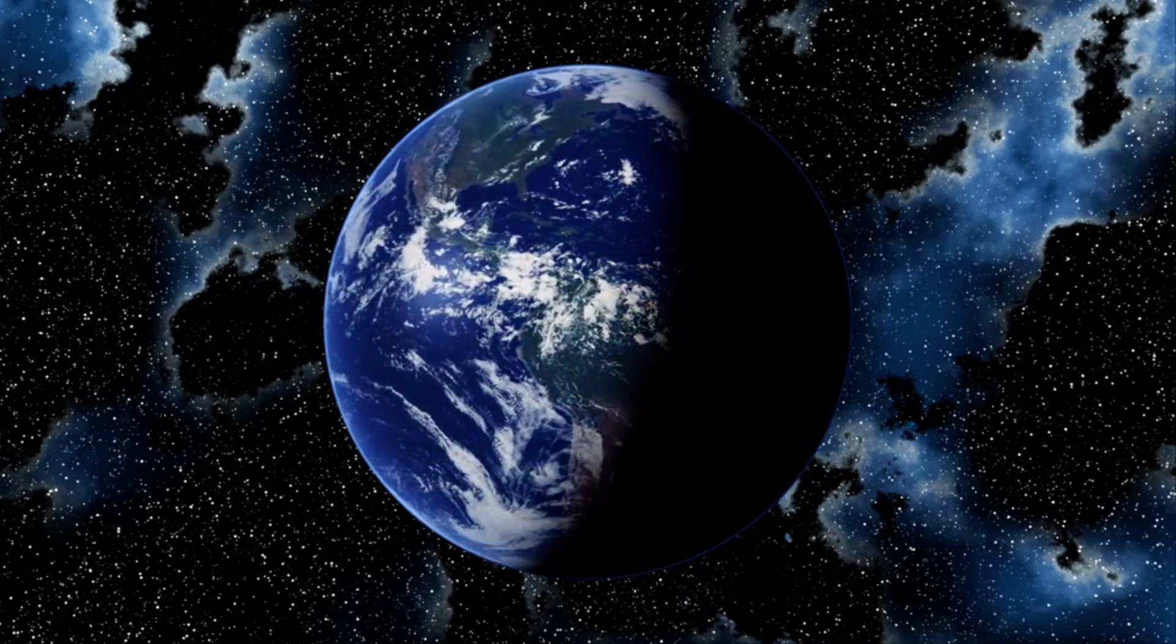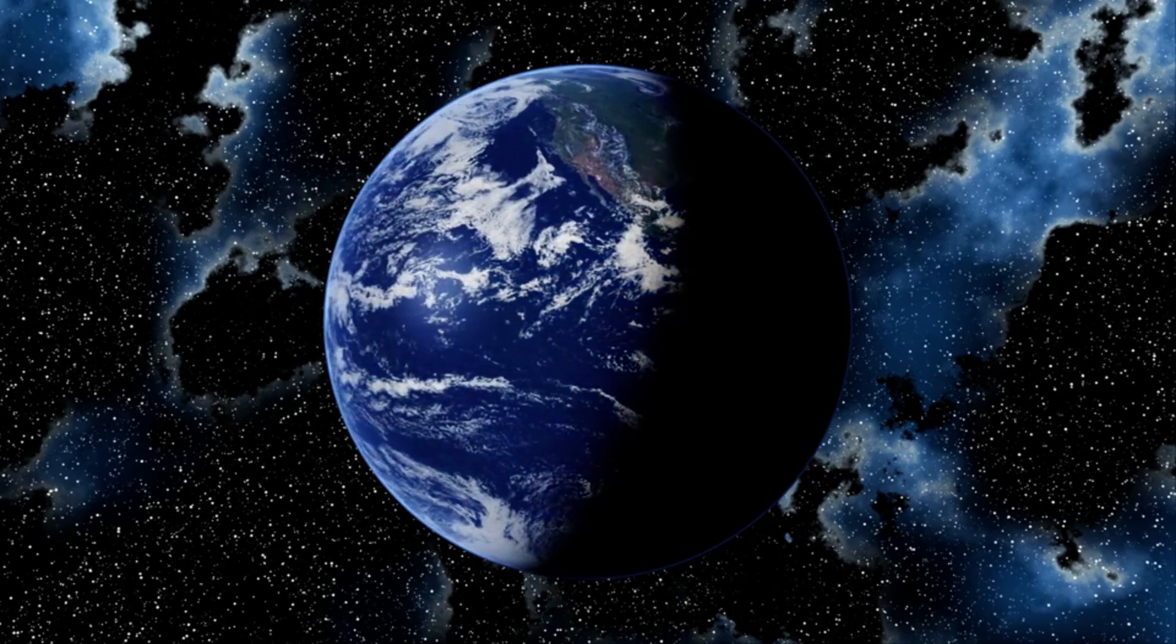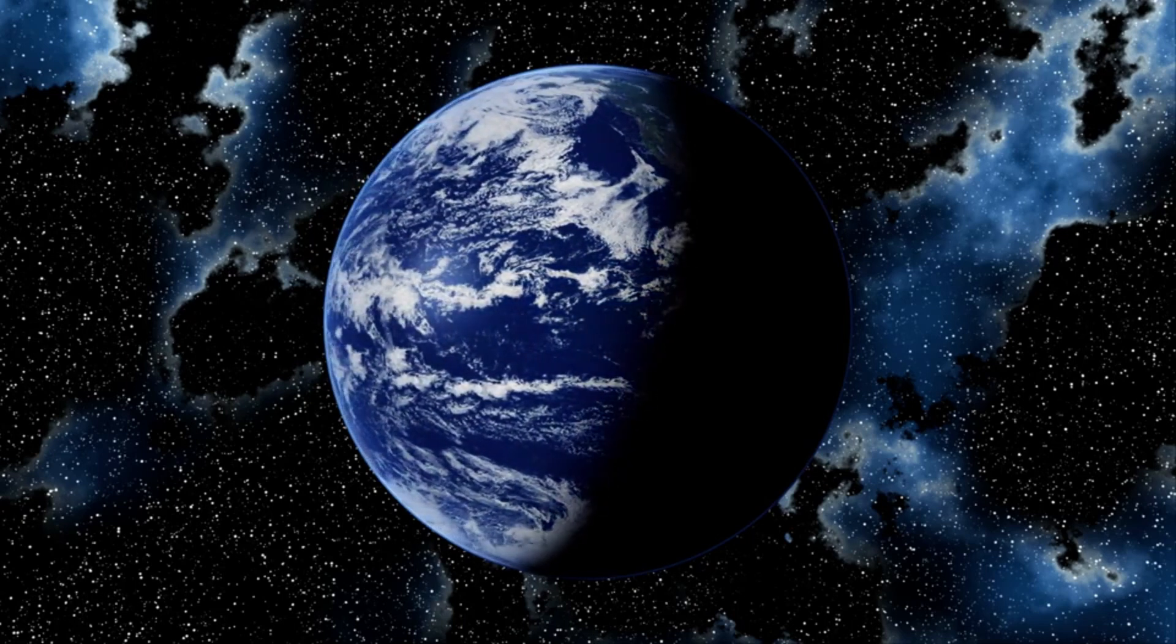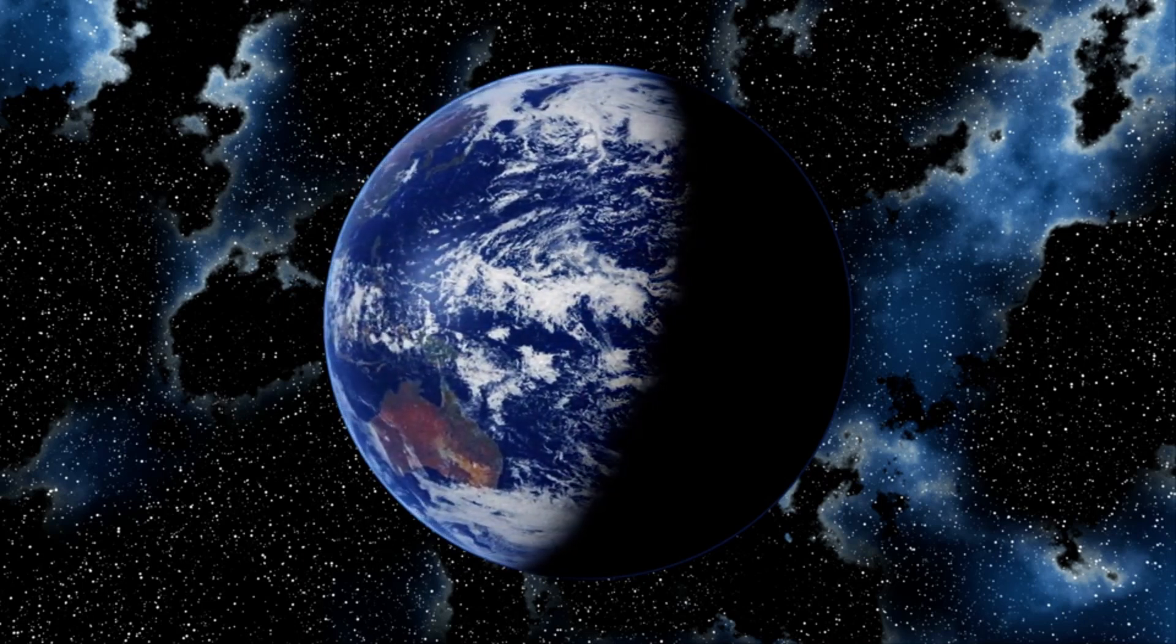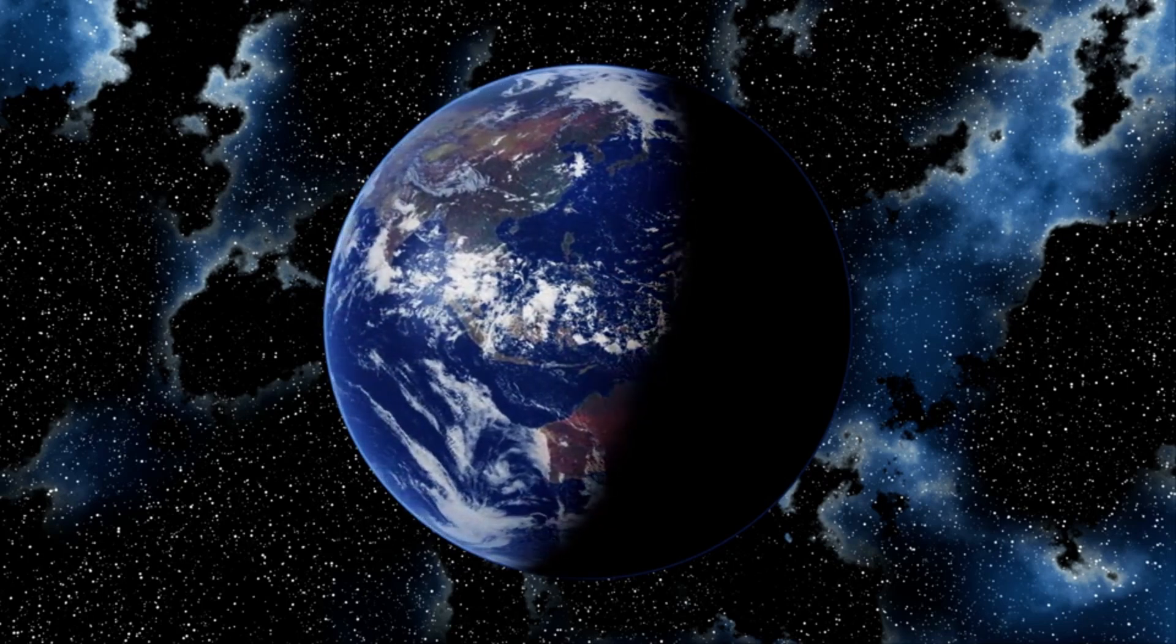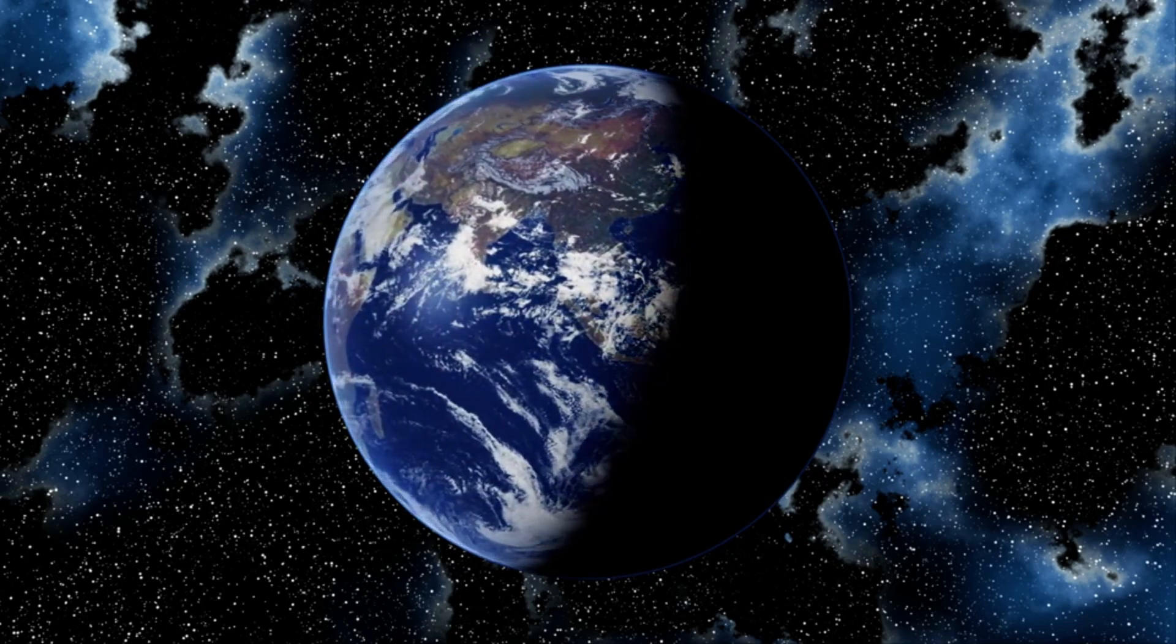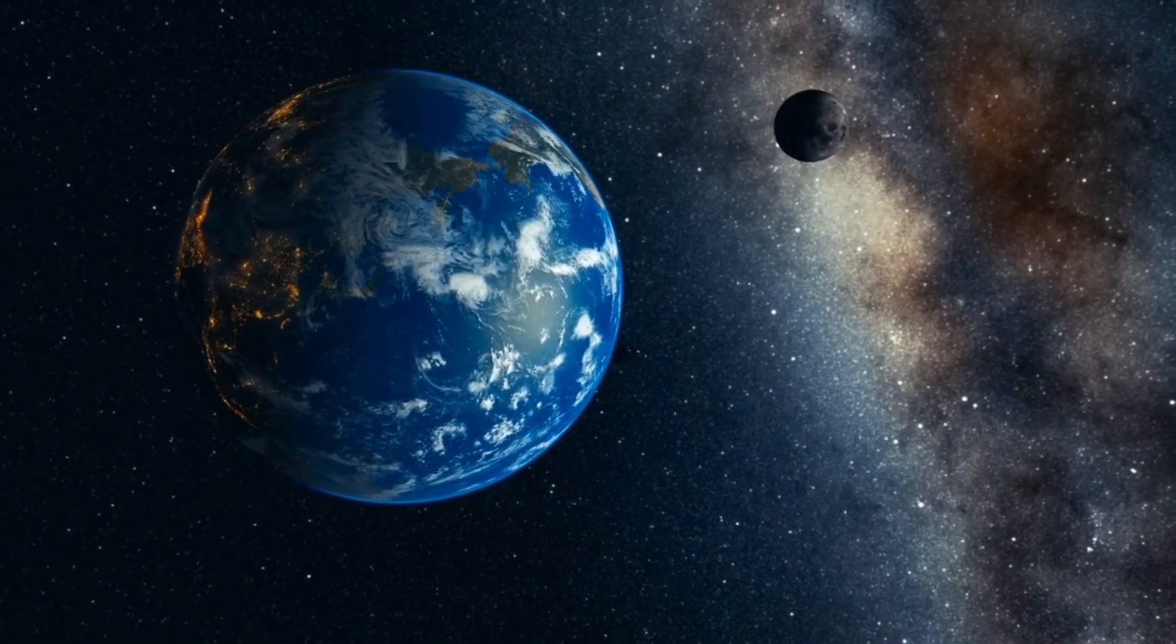Earth doesn't just spin on its axis, it's also racing around the sun at super speed, zooming at about 67,000 miles per hour. It takes a whole year, or 365 days, for Earth to make one complete trip around the sun, which is why we have seasons and a new birthday every year.